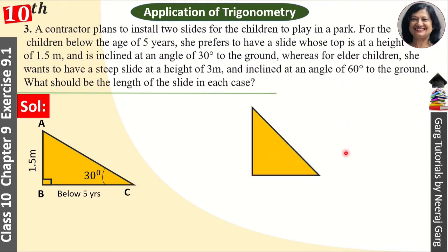So for this, we will make another slide. The height of 3 meter is at a height of 3 meter and the ground is at an angle of 60 degrees. Now we will find the length of slides in two cases.